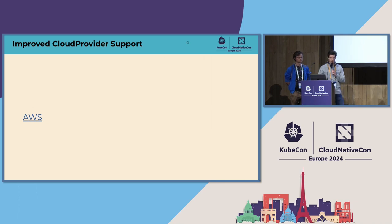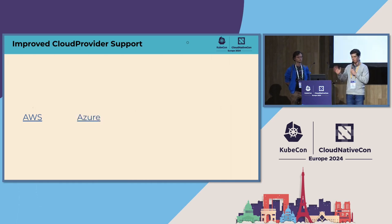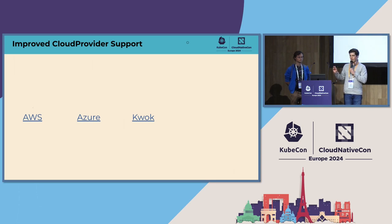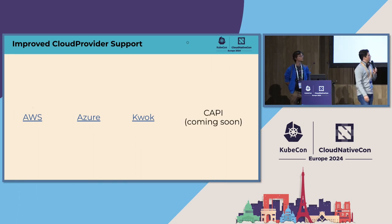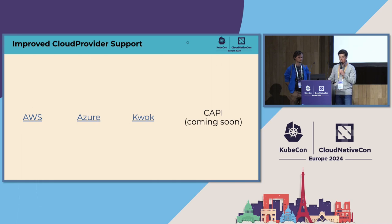We improved cloud provider support. AWS shepherded and built Karpenter from the beginning. Azure announced support last KubeCon. We launched KWOK cloud provider support — Kubernetes without Kubelet — which is more of a toy cloud provider if you're interested in experimenting with Karpenter without running real capacity; it exists within our repo. And CAPI is also working on a Karpenter provider that would enable provisioning of CAPI resources — that one's coming soon with an active working group.